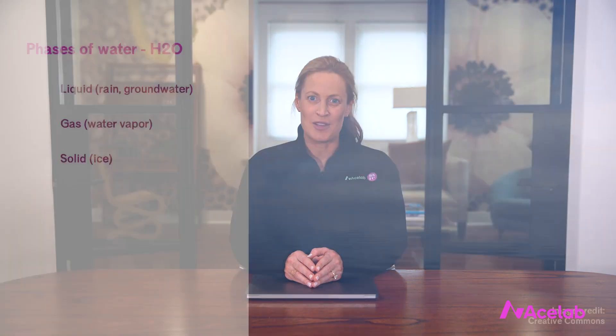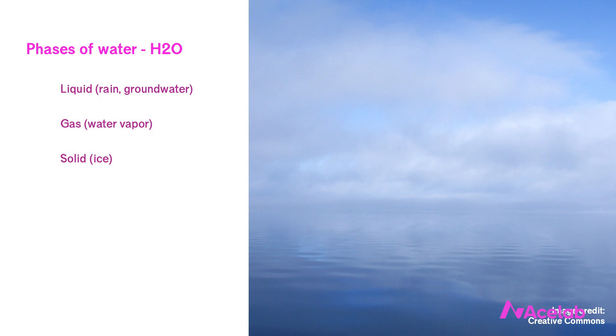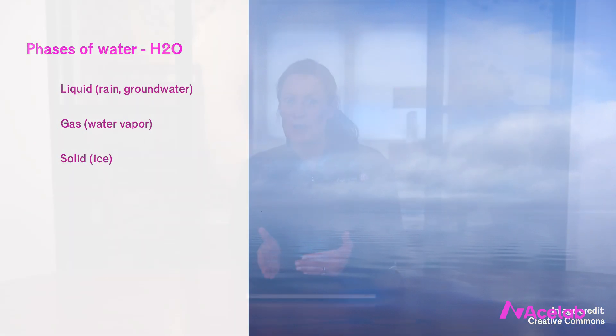Water comes in three phases: it can be a liquid, a gas, or a solid. When we think of the chemistry of water, we think of H2O — two atoms of hydrogen and one atom of oxygen. But when we're looking at a drop of water, we're really dealing with clumps of individual water molecules. It turns out there's something like 1.5 sextillion molecules of water in a single drop. The point is that when water is large enough that we can see it, there are a lot of molecules stuck together, not just one molecule.